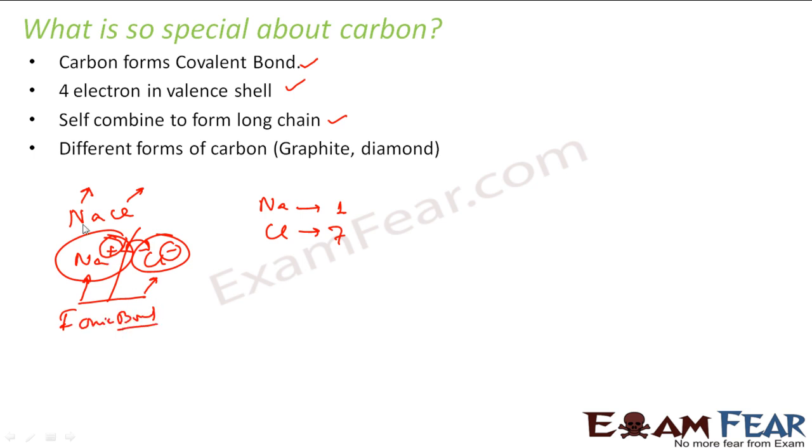In this case, Na had one extra electron. So it gave one electron to Cl and got a positive charge. Chlorine, since it took an electron, becomes Cl-. It got a negative charge but they are stable. Now since they have charges with them, there is an attraction between Na+ and Cl- and they form a bond. And that bond is an ionic bond because they are all ions.